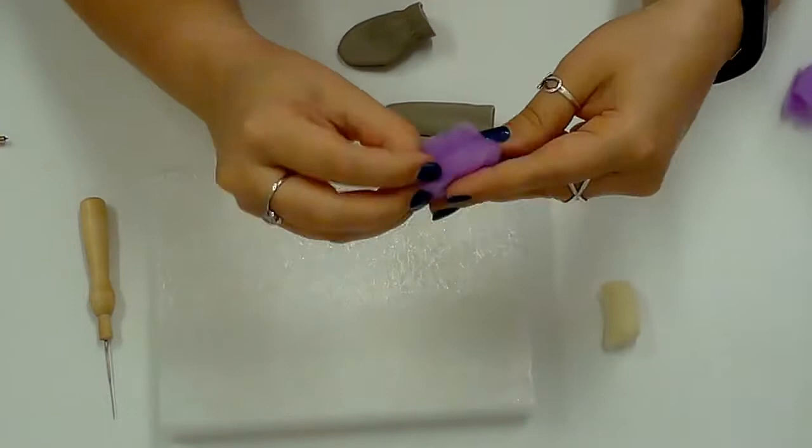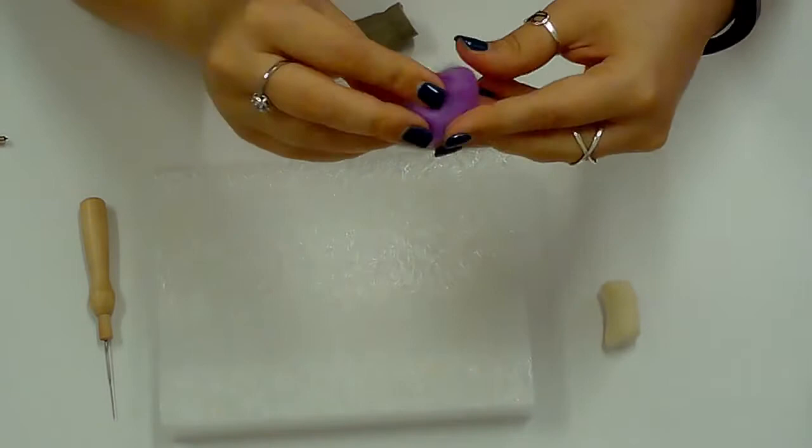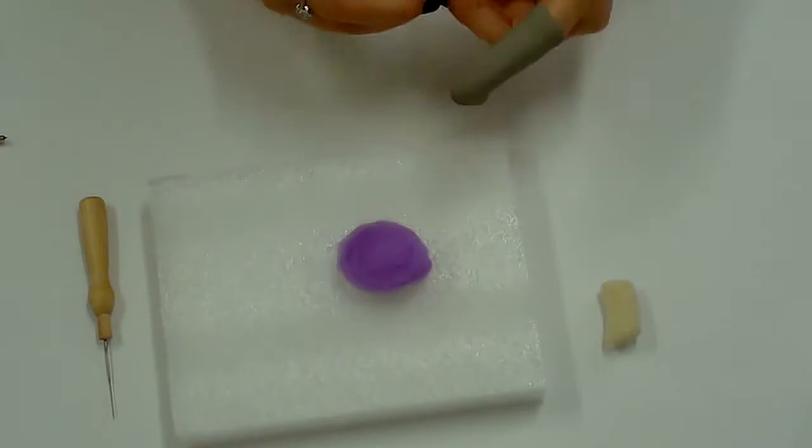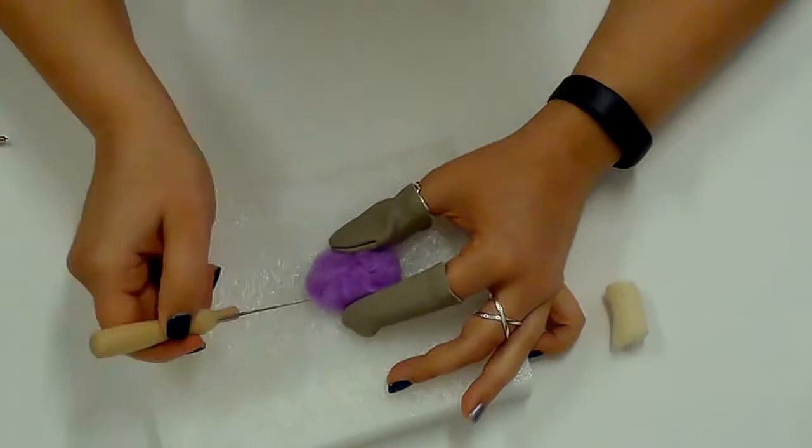For the mushroom top, shape the wool into a ball with a flat bottom by tucking the edges underneath. Don't forget the finger protectors and begin poking the mushroom top into shape.